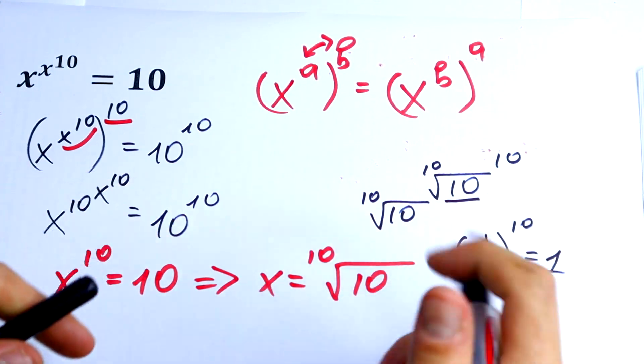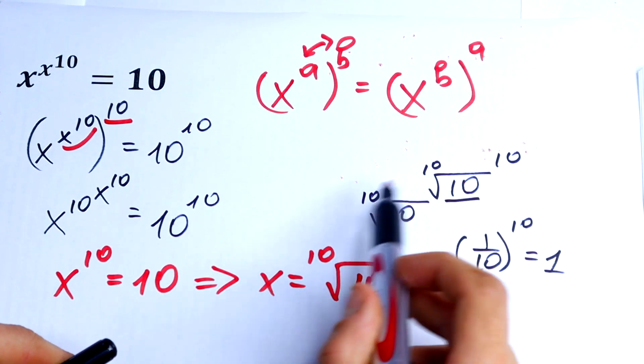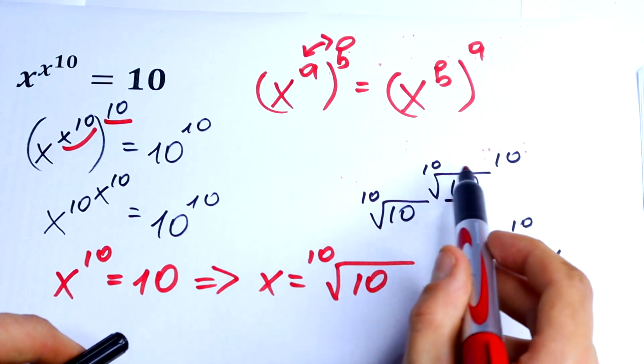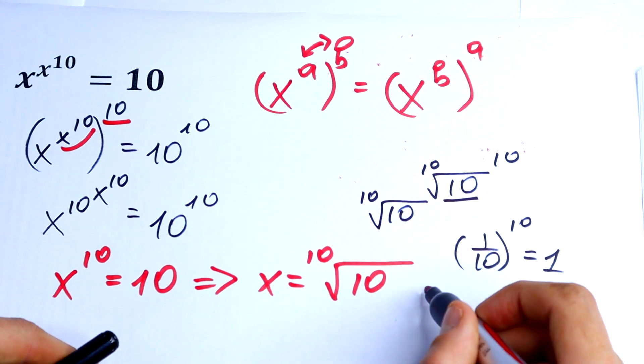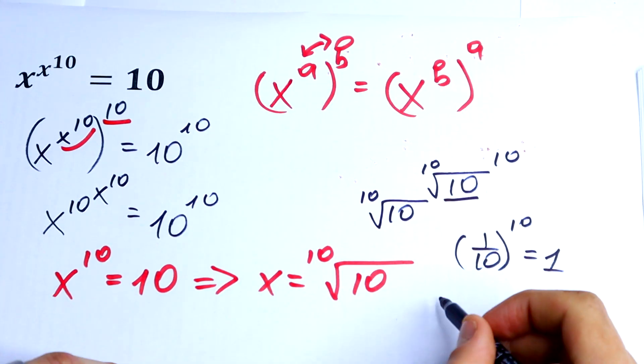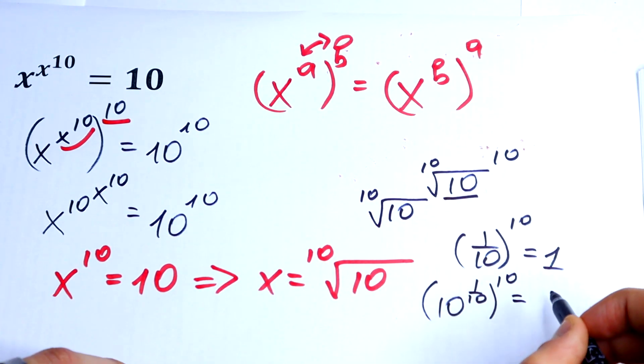So the next step we raise to the 10th power, raise our 10th root to the 10th power. So we will get 10 because of the last step we have right here. It would be equal to 10.